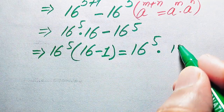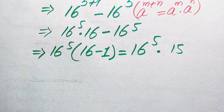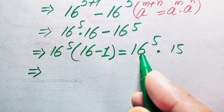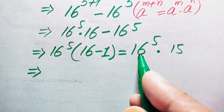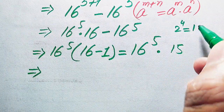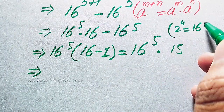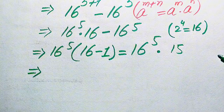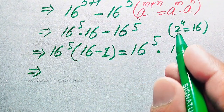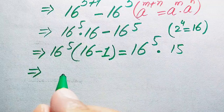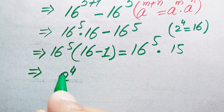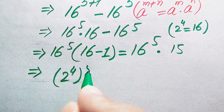In the next step, we write the prime factors of 16. We know that 2 to the power of 4 equals 16. We replace 16 with 2 to the power of 4, so the expression becomes (2 to the power of 4) to the whole power of 5, multiplied by 15.